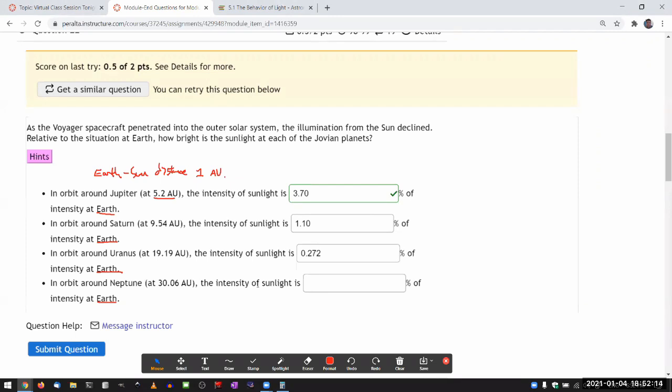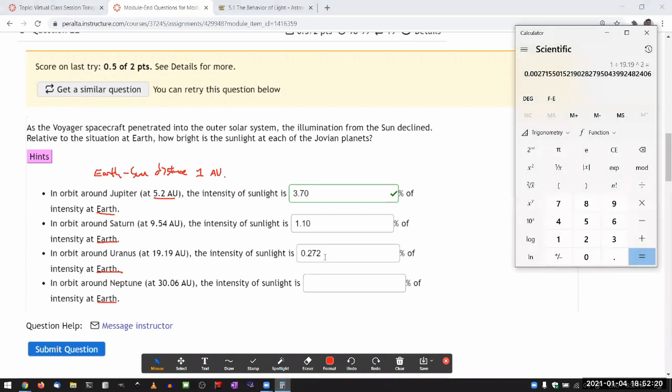And I think one of the reasons I was asking this question was so that you can see just how much dimmer sun gets at those distances. So 1 divided by 30.06 squared equals, so two decimal places, 0.111.